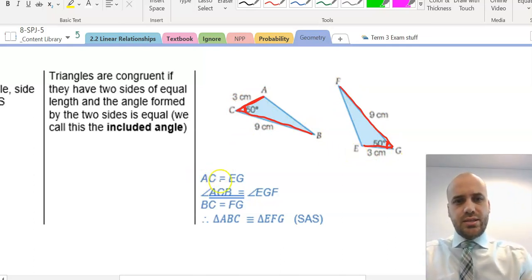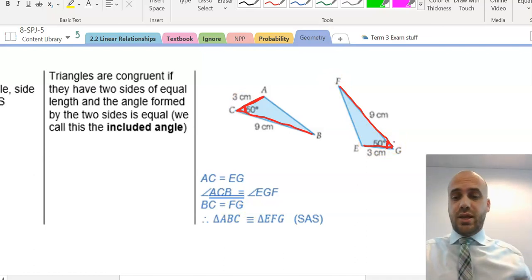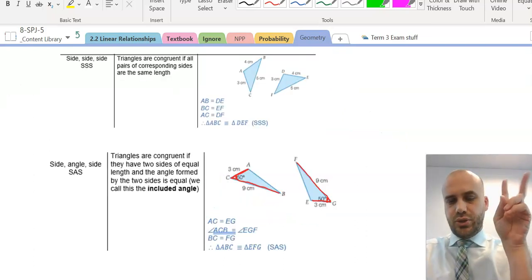So, here we say that AC equals EG. AC equals EG. We say that angle ACB equals angle EGF. And we say that BC, side BC, equals side FG. And therefore, we can say that those two triangles are congruent because of the SAS rule. So, that's two down, two to go.